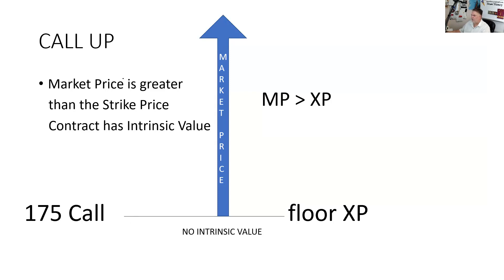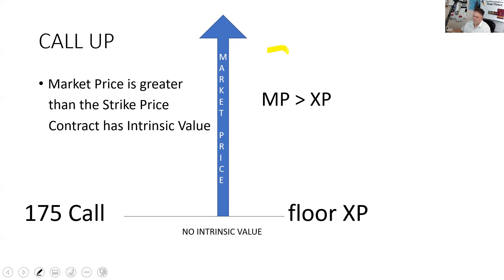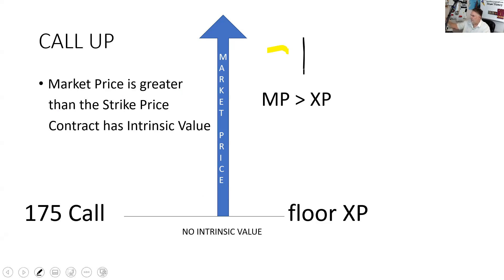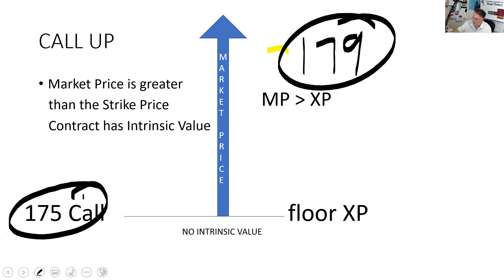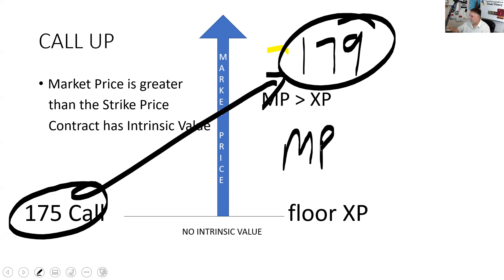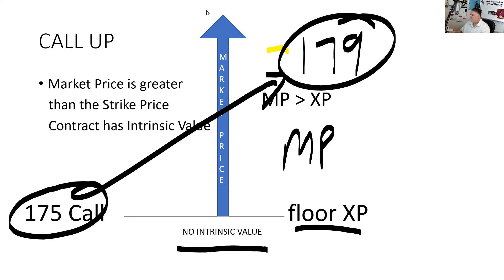Here's a graph. Call up—calls have intrinsic value when the market price is up from the strike price, which is synonymous with in the money. Apple is at 179 today—I checked before recording. The market price is up from the strike price. Below there is a floor—XP means strike price. I think of options as being about floors and ceilings. In a call contract, there's a floor but there isn't a ceiling in terms of the market price relationship, because the market price can go up an infinite amount.